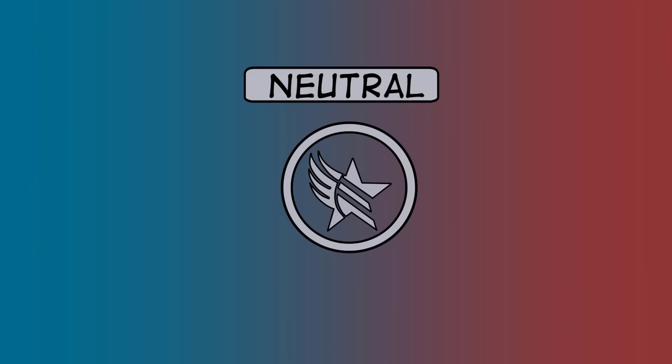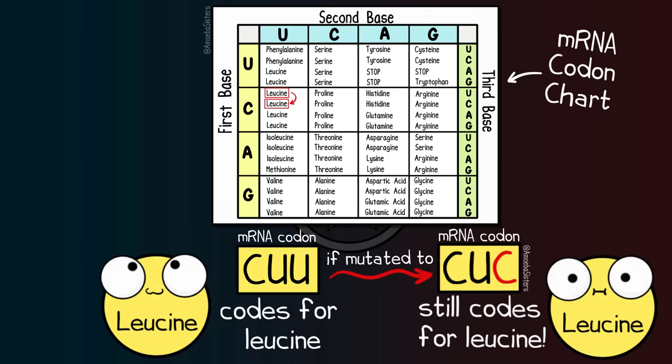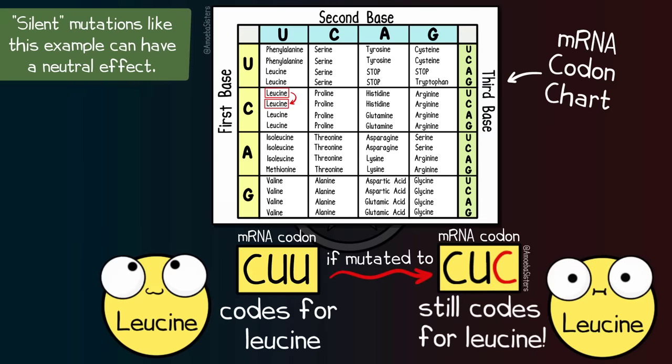Many mutations can be neutral in effect. You can see this codon codes for the amino acid leucine. But if it experiences this particular silent mutation, even though a base has been altered, it still codes for leucine. It did not change the amino acid.